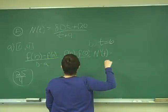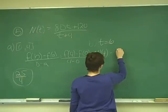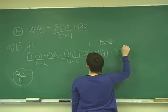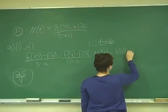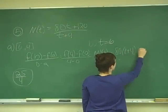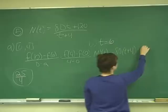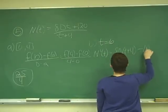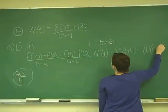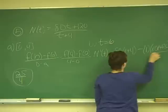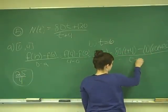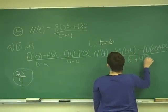And that's going to be the derivative of high times the low, which is 80. The derivative of high is 80 times the low, which is T plus 4, minus the derivative of low, which is just 1, times the high of 80T plus 120, all over our T plus 4 squared.